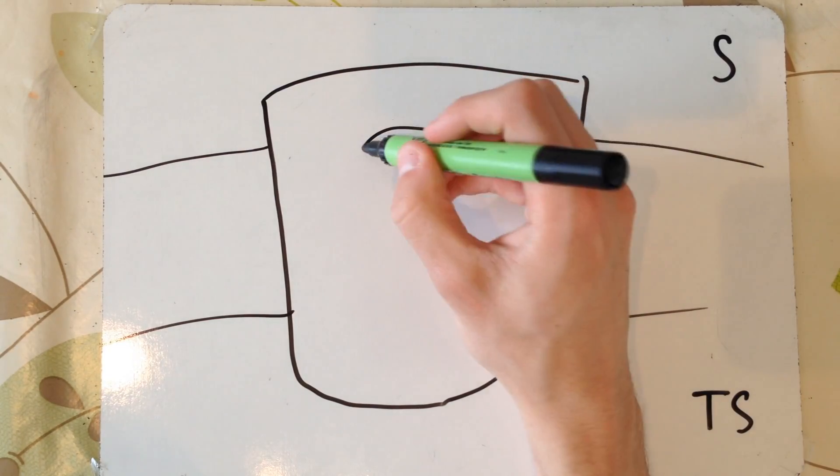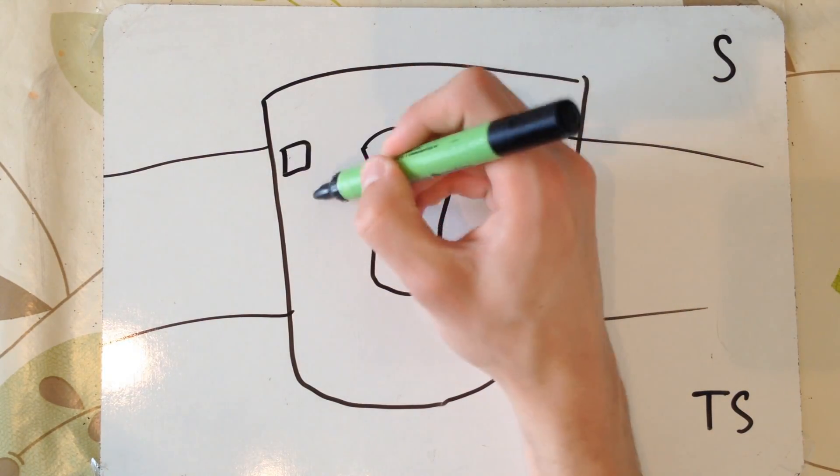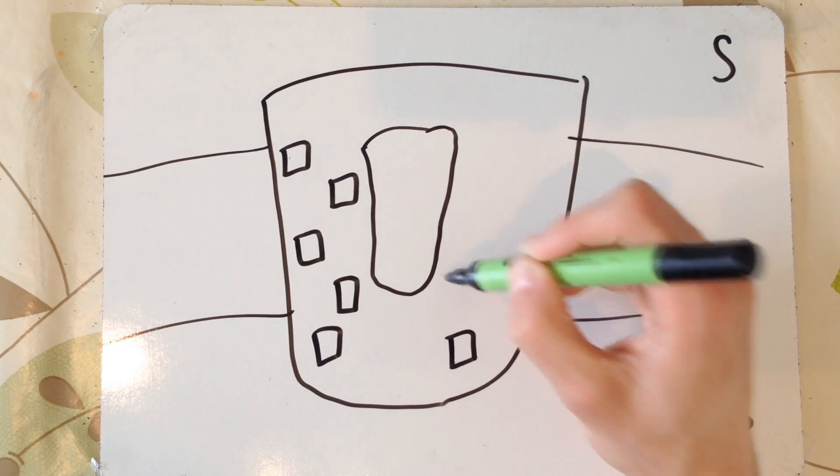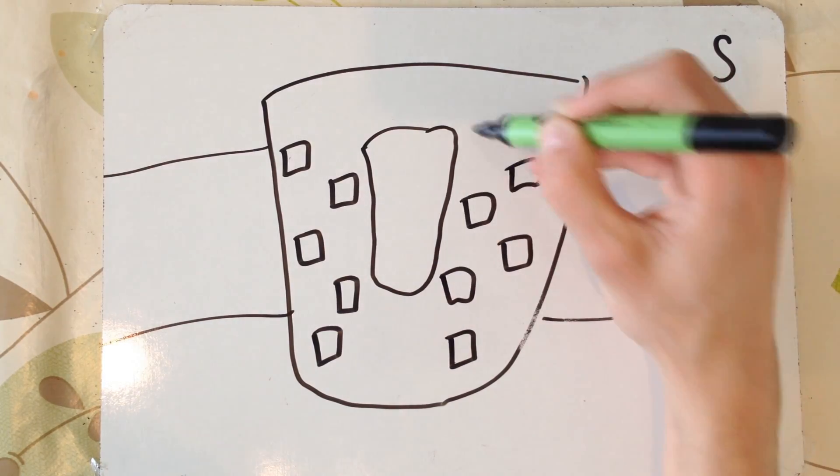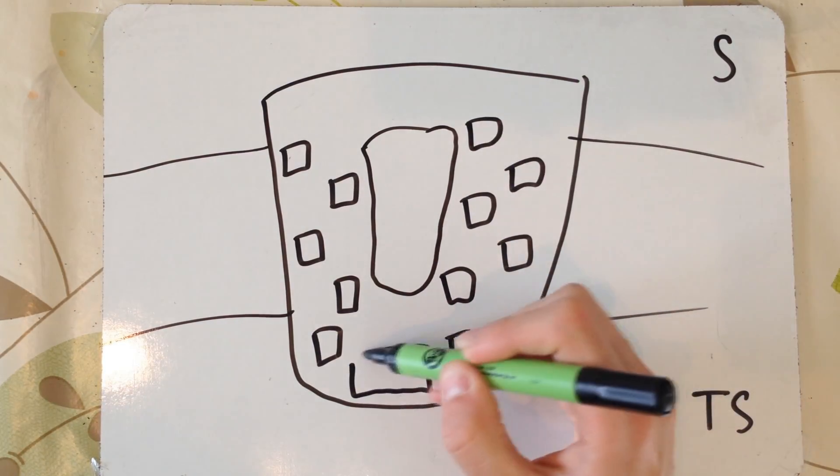What we've got here is the funnel-shaped photosystem. These little squares I'm drawing here are all the different types of photosynthetic pigments that are linked together in this photosystem.